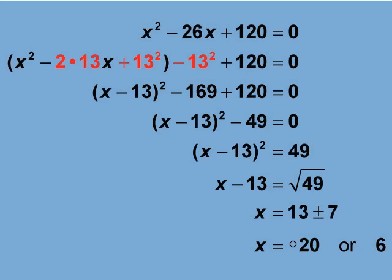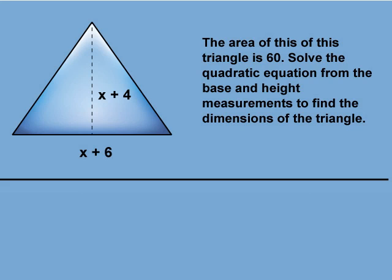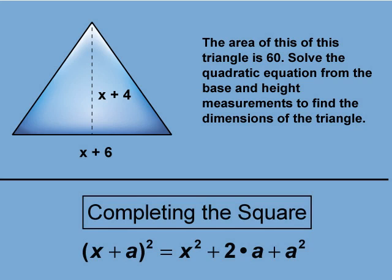Let's look at another example. The area of this triangle is 60. Solve the quadratic equation from the base and height measurements to find the dimensions of the triangle. We'll use the technique of completing the square by modifying our quadratic to include the square of a binomial.